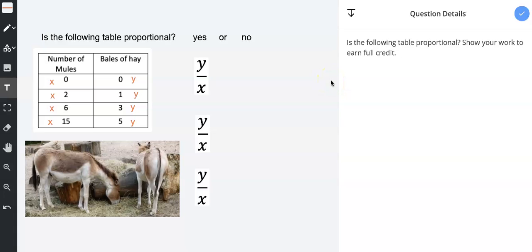Is the following table proportional? Let's see how you did. You will notice that I went ahead and filled in x for the number of mules and then y for the bales of hay. X is on the left side, the left column, and y is the right column.